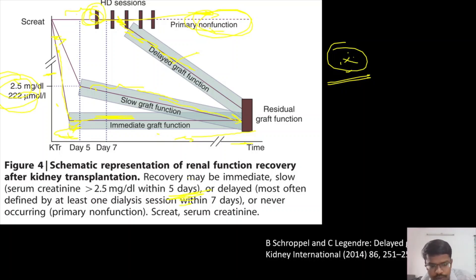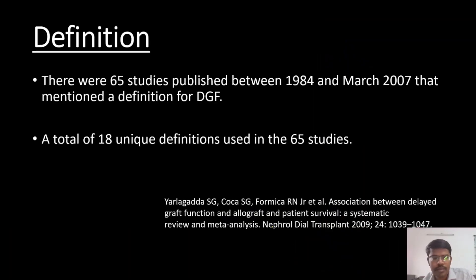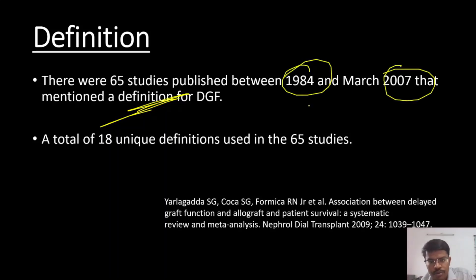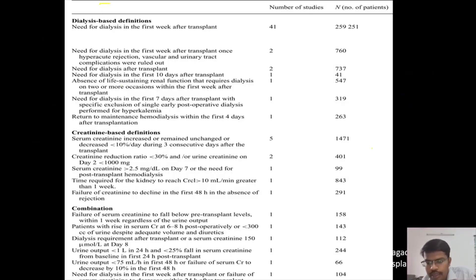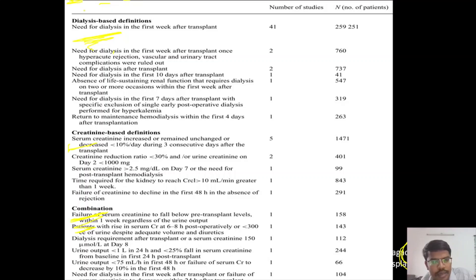The cut-off of 2.5, 5 days, and 7 days comes from a study, the reference of which is mentioned here. From 1984 to 2007, various studies tried to form a definition for delayed graft function. You can look at the table — the reference is mentioned. There are dialysis-based definitions, creatinine-based definitions, and combinations using both. Definitions include: need for dialysis after transplantation, and need for dialysis in the first 10 days after transplantation.